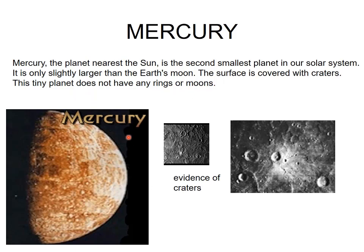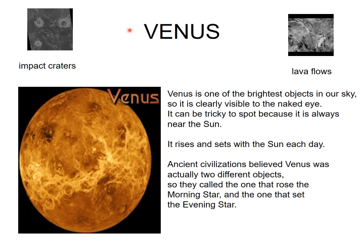Venus is one of the brightest objects in our sky and is clearly visible to the naked eye. It can be tricky to spot because it is always near the Sun, and because Venus exists so close to the Sun, you cannot identify any crater on its surface.